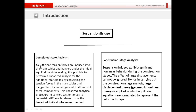For completed state analysis, since sufficient tension forces are induced into the main cable and hanger under the initial equilibrium state loading, it is possible to perform a linearized analysis for additional static loads by converting the tension forces in the main cable and hangers into increased geometric stiffness of these components. This linearized analytical procedure is referred to as the linearized finite displacement method. In summary, you obtain the initial cable forces due to the completed state loading, convert them into increased geometric stiffness, then apply additional loads and run the analysis.